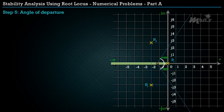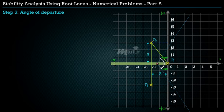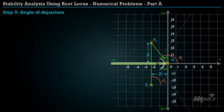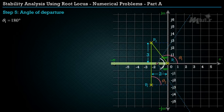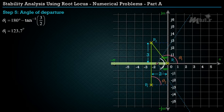Next, find the angle of departure. Consider complex pole P2 and draw vectors from all other poles to P2. The angles of these vectors are θ1 and θ2. θ1 = 180° − tan⁻¹(3/2) = 123.7°.